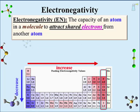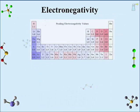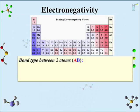Values decrease going down the table and increase going across the rows. The halogens have particularly high electronegativities; the alkali metals, particularly low. See the lecture on Periodic Trends for more detail on electronegativity. How do we use the electronegativity scale to determine whether a bond between two atoms is covalent, polar covalent, or ionic?